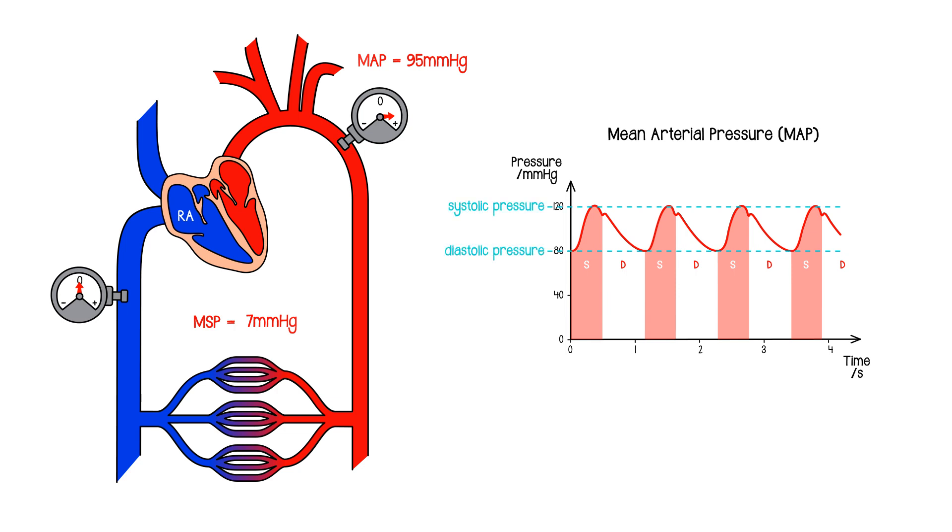So the time averaged value for the mean arterial pressure is 95. It's a little bit closer to diastolic than it is to systolic. Now if you want to calculate what the mean arterial pressure should be, the way you do it is you start with diastolic pressure and then you add a third of the difference. So it's a third of the way up from diastolic to systolic, which is a useful little calculation to be able to do. So it comes to around 95 millimeters of mercury in my average person.